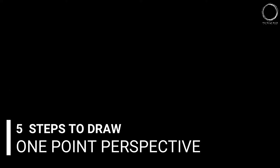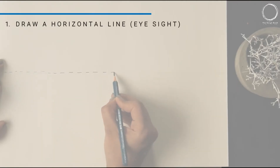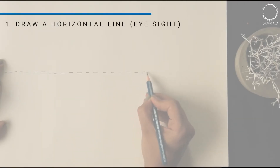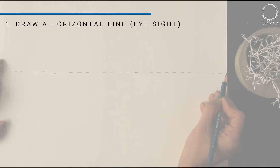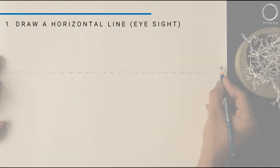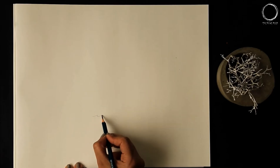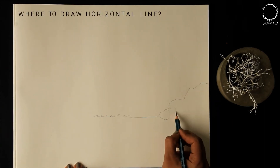Hi guys, welcome back. Today we are talking about five steps to draw one point perspective. The first step is to draw a horizontal line that is the eyeline. With this, there is another question: where to draw the horizontal line?